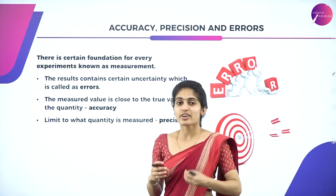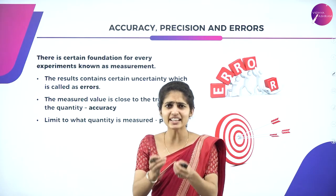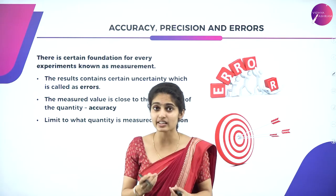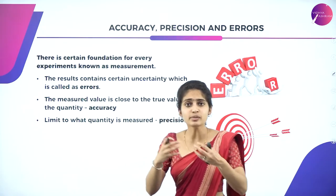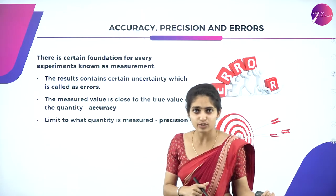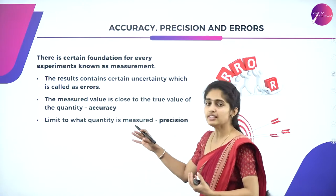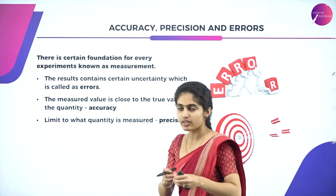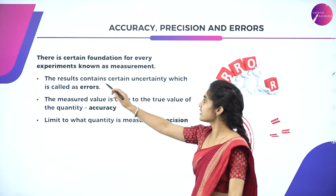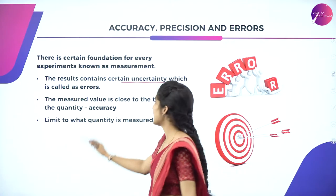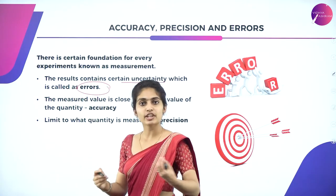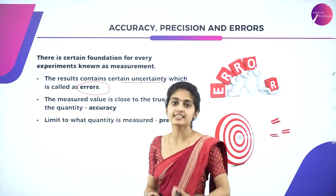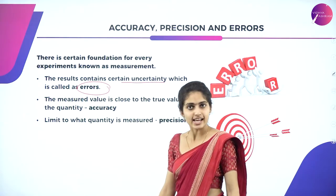We try to eliminate larger errors so that a slight error is acceptable. The foundation of experiment is measurement, and the result will always contain certain error. The result contains certain uncertainty, which is called error. We study methods to reduce these errors.